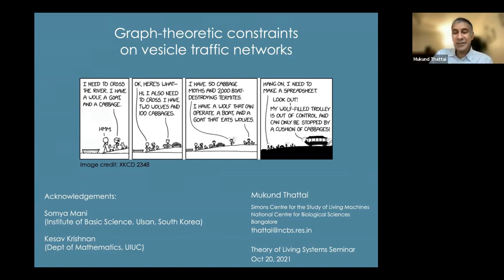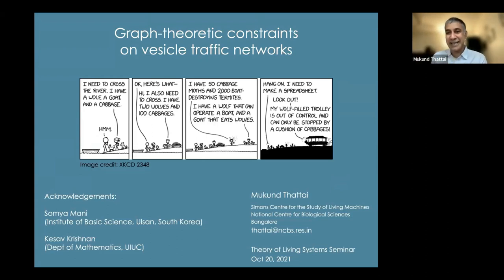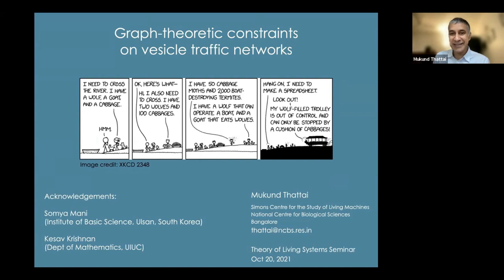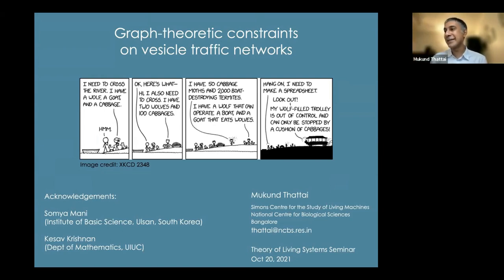This cartoon is about something called the boat puzzle or river crossing puzzles. We've all done these in school — somebody says I need to cross the river, I have a wolf, a goat, a cabbage; obviously the wolf eats the goat and the goat eats the cabbage, so you can't put them all together on the same boat. There's an easy solution to this. But biology is much more complicated than this one-step process. Someone else shows up and says I have two wolves, 100 cabbages, and a wolf that can operate a boat. This flavor of increasing constraints of what you can put on a boat is at the heart of the problem I'm going to outline for you today.